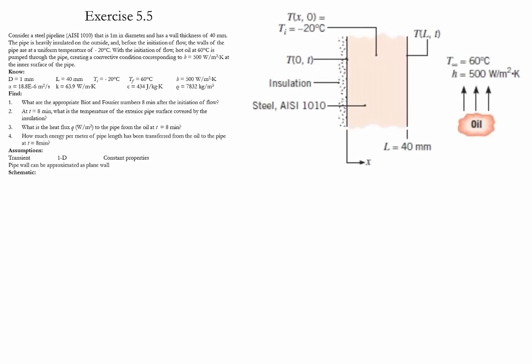Exercise 5.5. In this exercise we consider a steel pipeline of 1 meter diameter and a wall thickness of 40 millimeters. This pipe is heavily insulated on the outside and has an initial temperature of negative 20 Celsius.